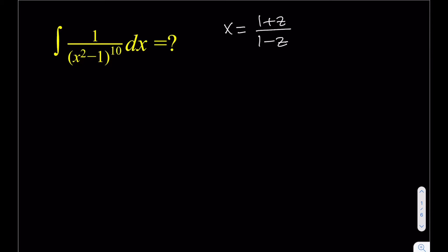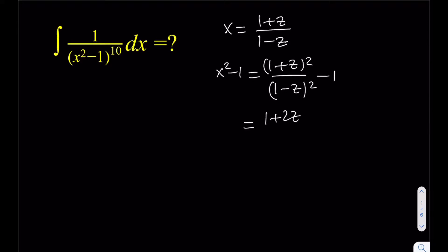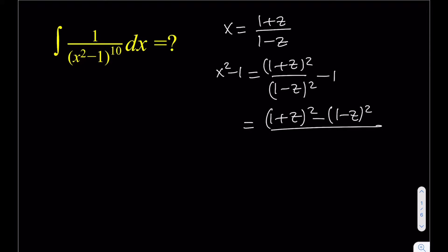The substitution we're going to use is x = (1+z)/(1-z). Let's calculate x²-1 from here: that gives us (1+z)²/(1-z)² minus 1. Making a common denominator, the numerator is (a+b)² minus (a-b)², which always equals 4ab, so we get 4z on top and (1-z)² on the bottom. So x²-1 = 4z/(1-z)².